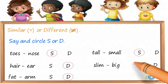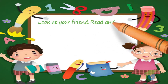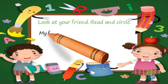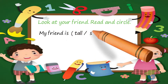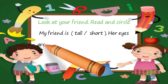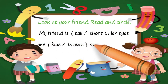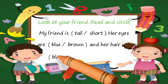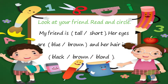Slim/Big — circle S, Similar. Look at your friend. Read and circle. My friend is tall or short. Her eyes are blue or brown. And her hair is black, brown, or blonde. The answer: My friend is tall. Her eyes are brown. And her hair is black.